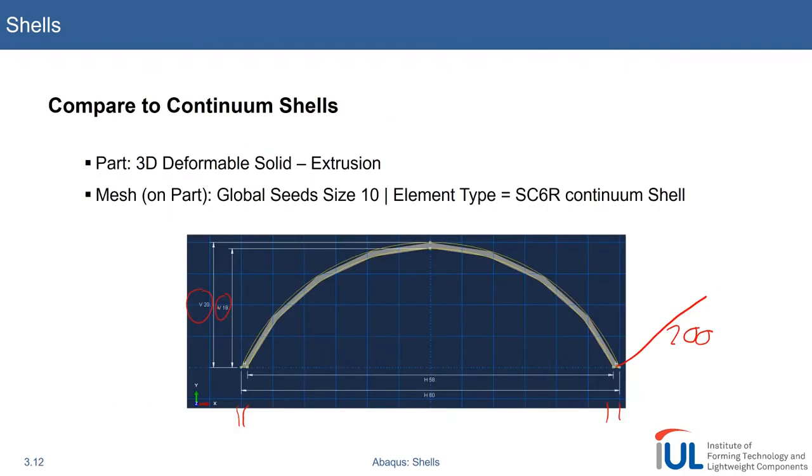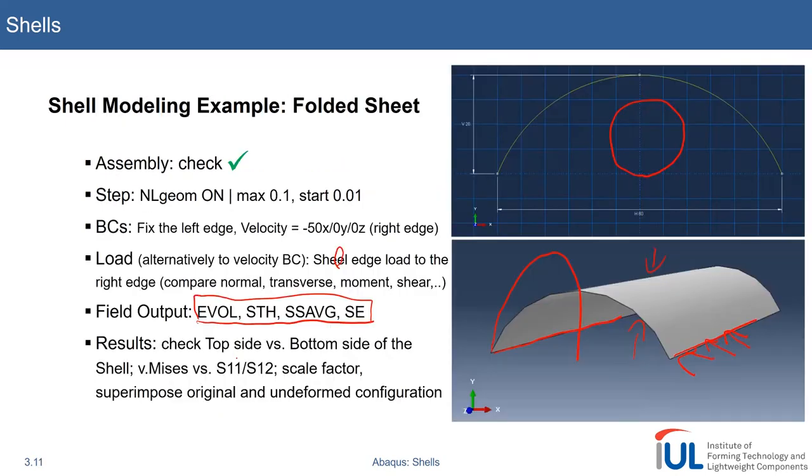Then you say, okay, but this is only comparable if we specify the reference surface. Reference surface equal top. Why? Because we gave the same geometry for the outer ring, compared to our conventional shell modeling example.